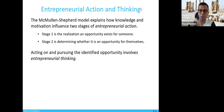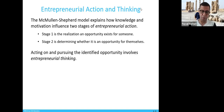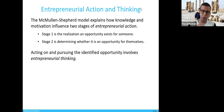Stage one is the realization that an opportunity exists for someone. Stage two is determining whether this opportunity is for yourself. An entrepreneur says, okay, there is a deal, there is a business we can do in a new market, and then starts to think: can I do it, or is it available for somebody else?